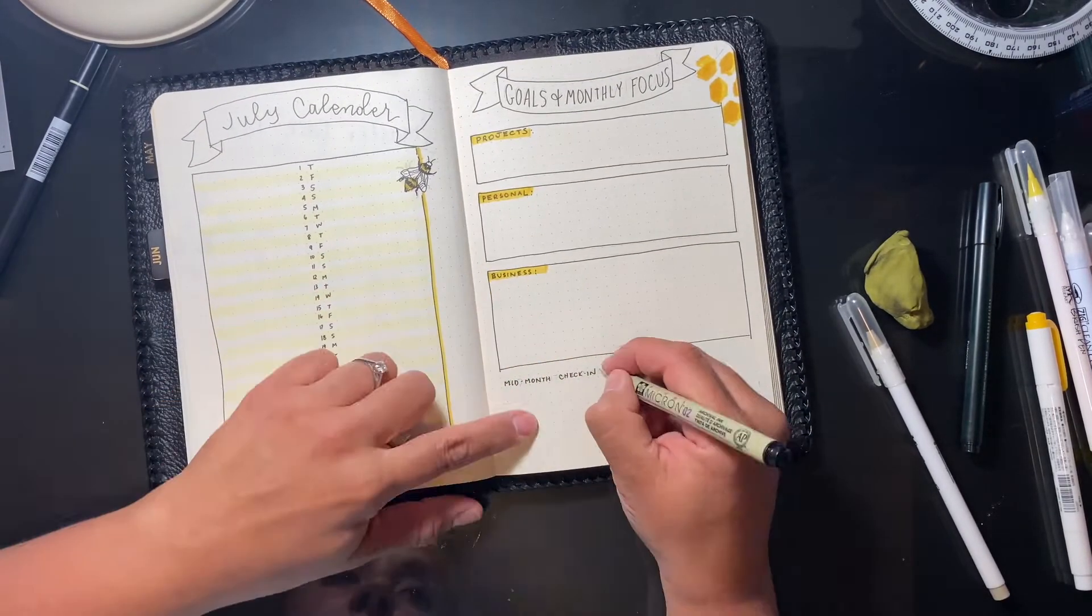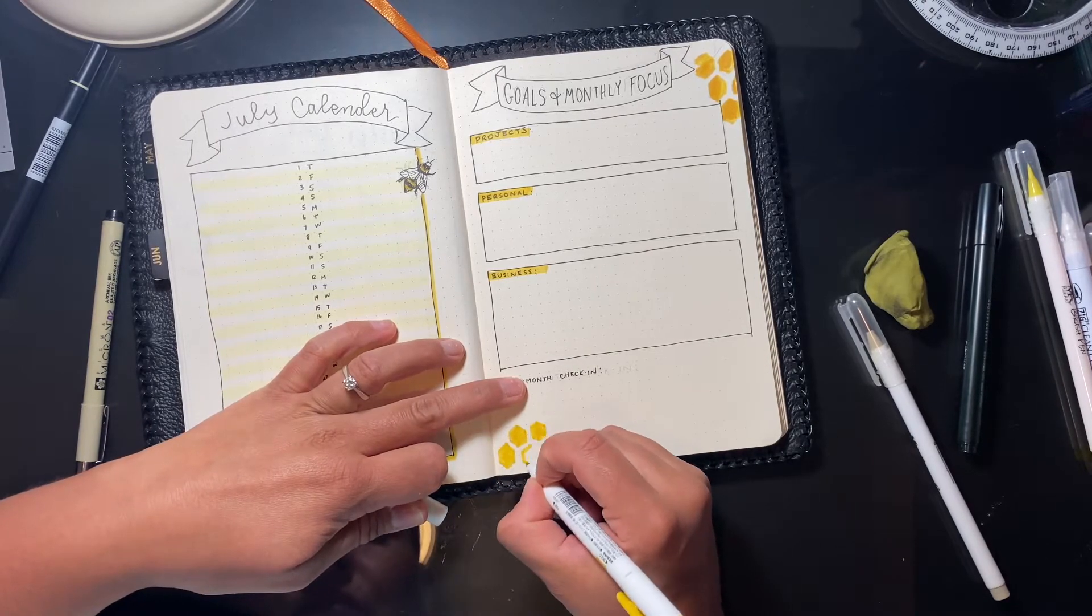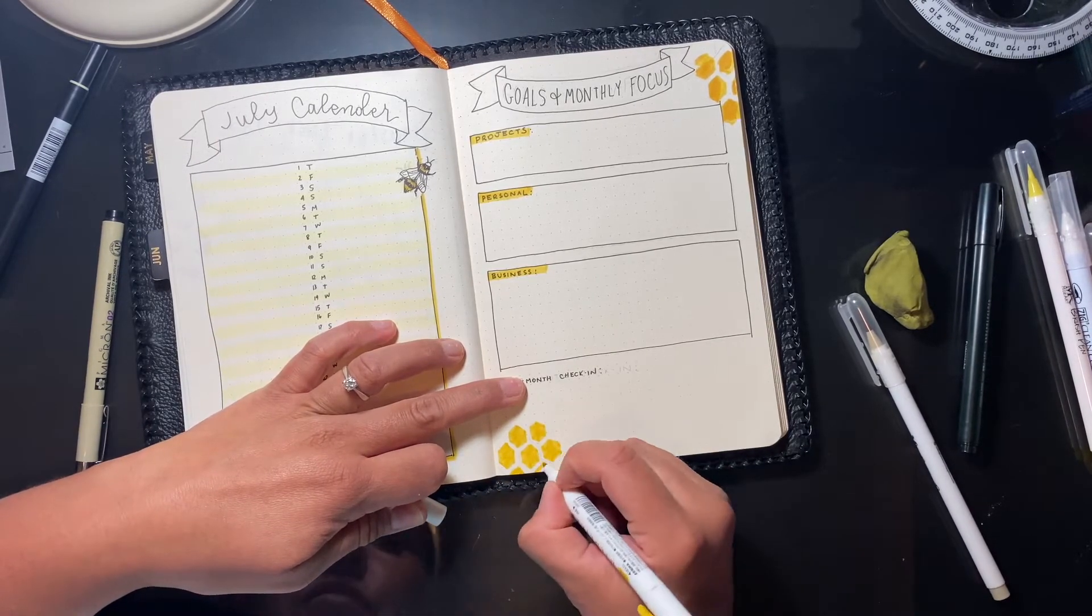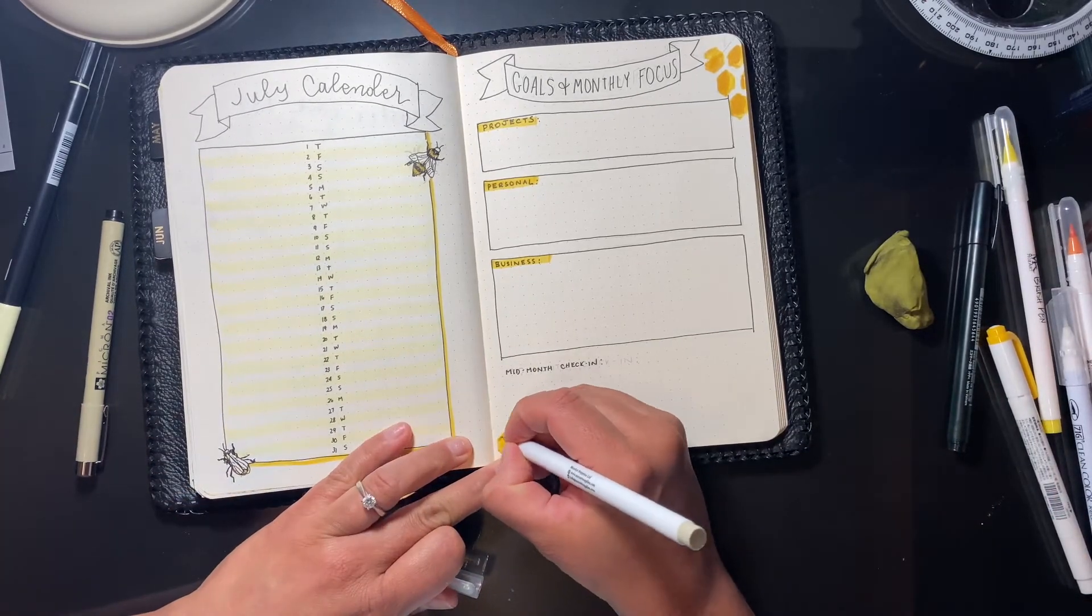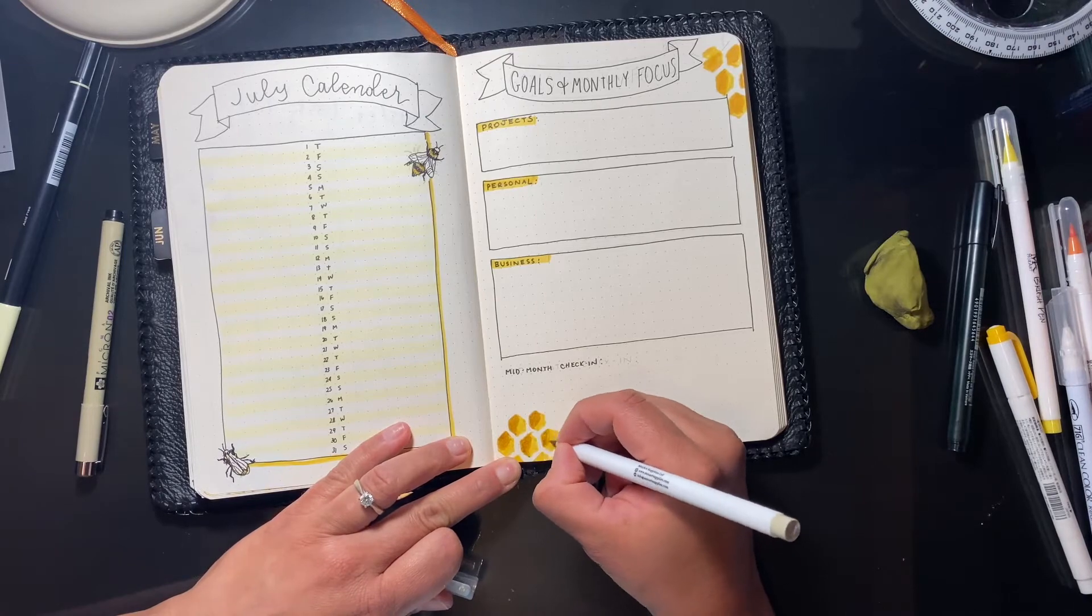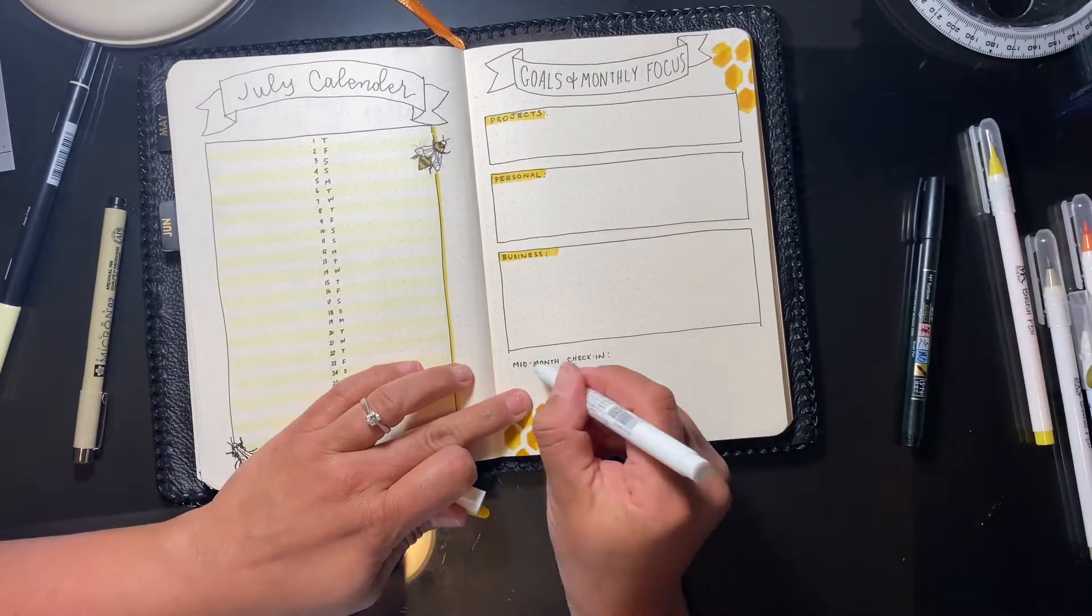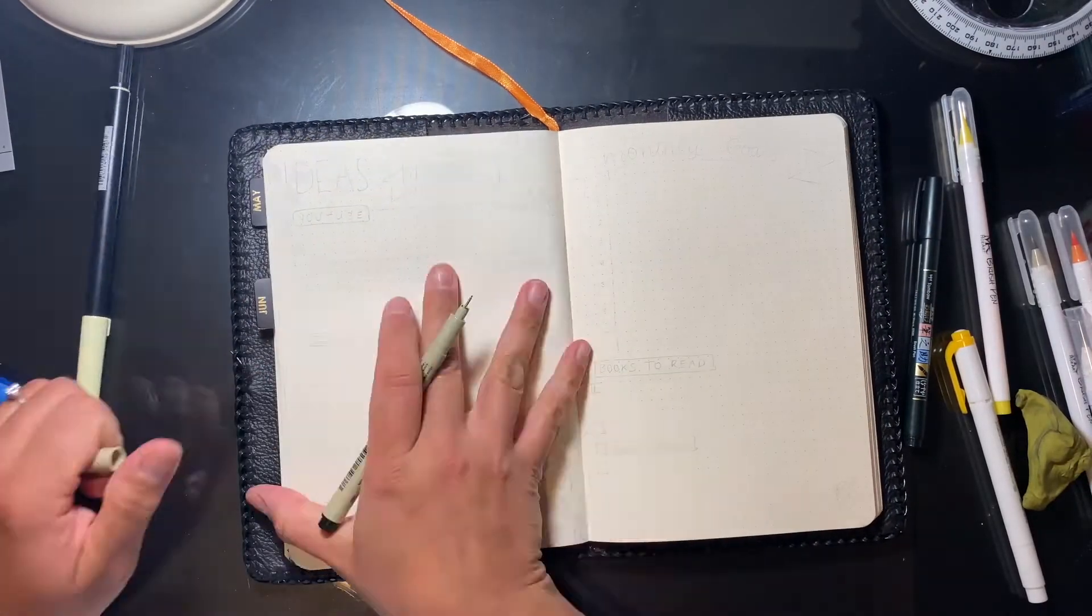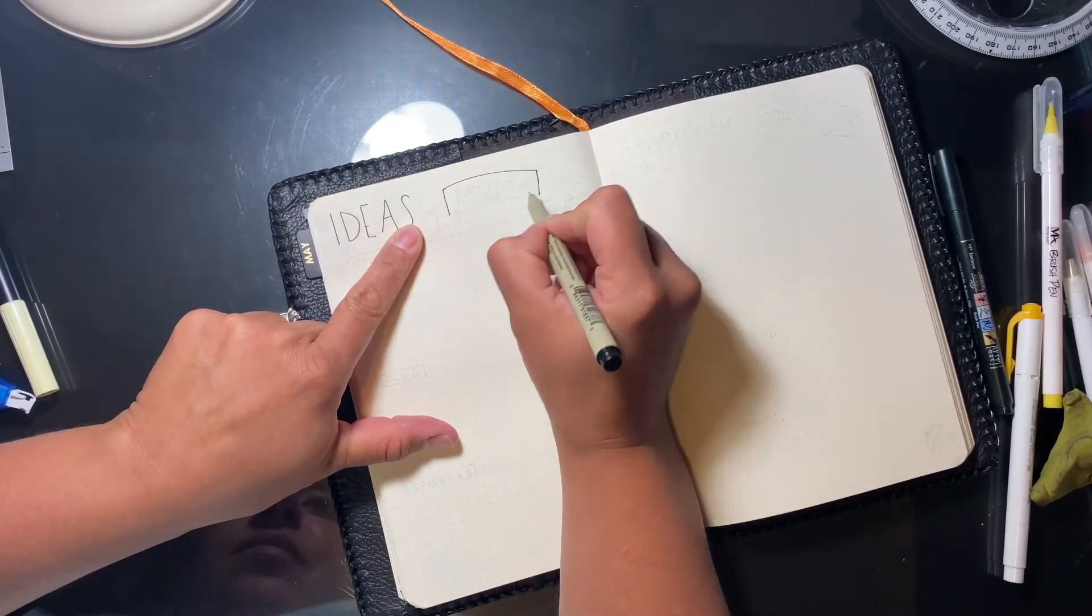The following spread is an ideas page where I can write down my YouTube video ideas, blog and sticker ideas. Next to that I had another monthly goals page more focused on learning, books to read, and reiterating my yearly goals. What I wish I'd done is put the two goals pages together and the idea pages with the calendar page. It would have made more sense reflecting back on it now.